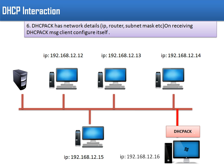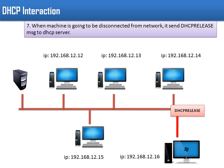During communication, at a time when this machine is about to move to another network or be disconnected, this machine will release its IP address. Once its work is done and it is about to disconnect, this node sends a DHCP Release packet to the server. When the server receives the DHCP Release packet, it marks that IP address entry — previously marked unavailable — as now available again.